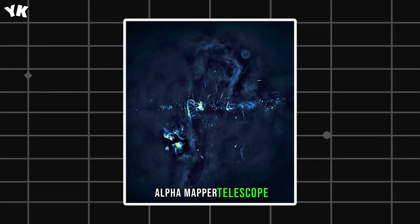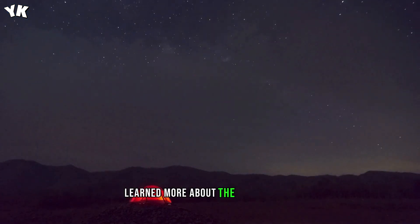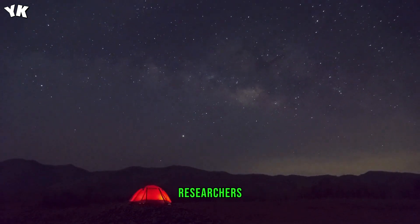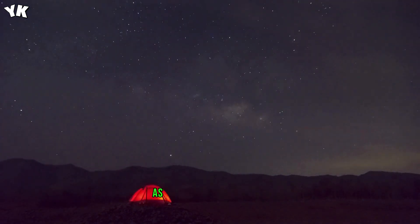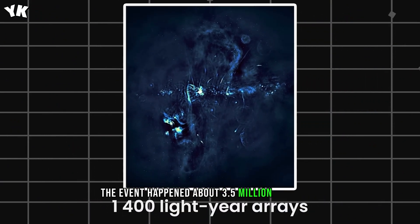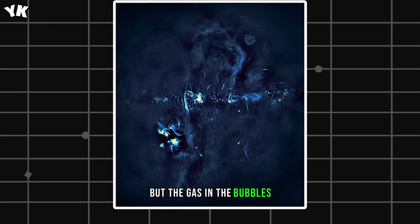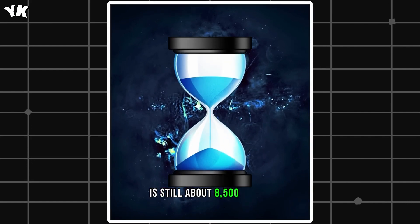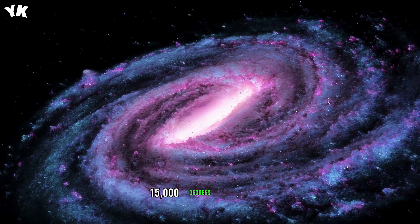A decade later, with the help of the Wisconsin H-Alpha Mapper telescope, astronomers learned more about the Fermi bubbles. Researchers found ions in them that formed as a result of an intense light flash. The event happened about 3.5 million years ago, but the gas in the bubbles is still about 8,500 kelvin.